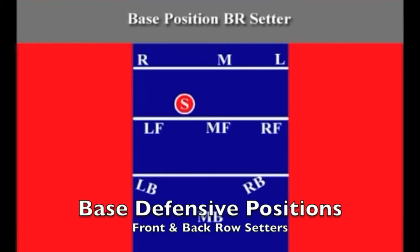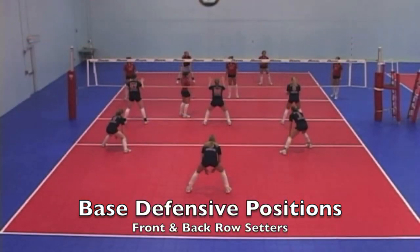The defense is at a three-hitter offense with a back row setter. We have the left front blocker split between the middle and right side attacker. By being in this position, the blockers are able to play their positions without fear of the setter attacking the ball, since he or she is back row. Also note that the back row defenders are up closer to the net in case of an overpass or a quick attack out of the middle front position.